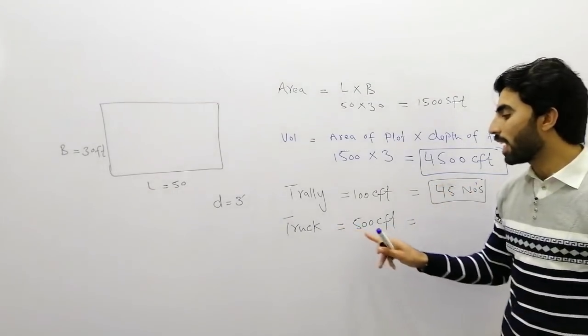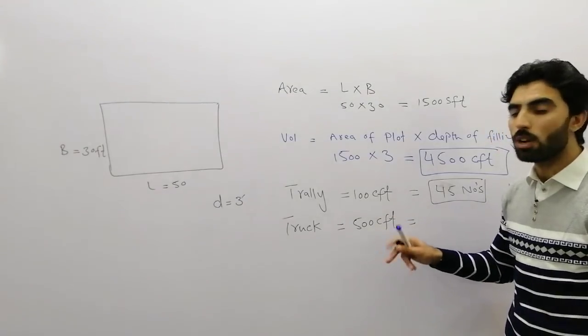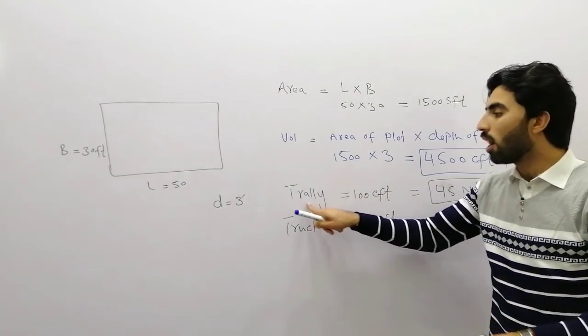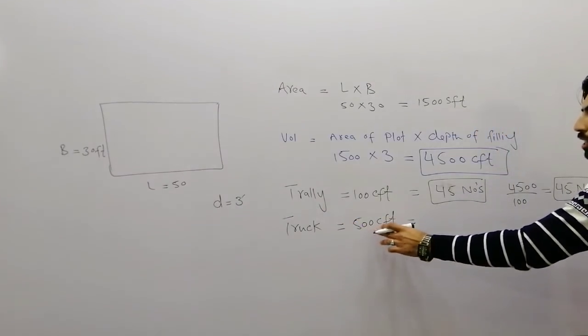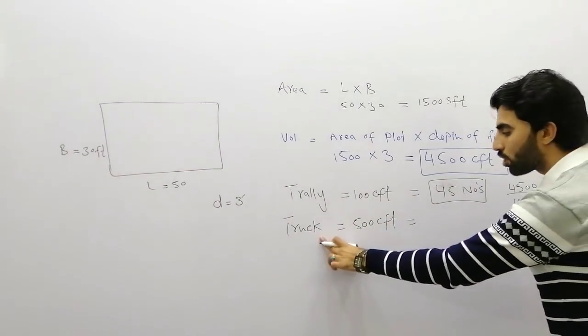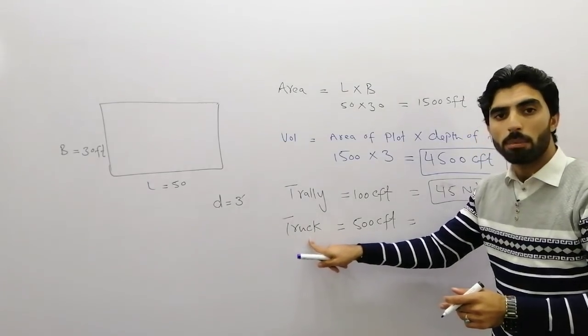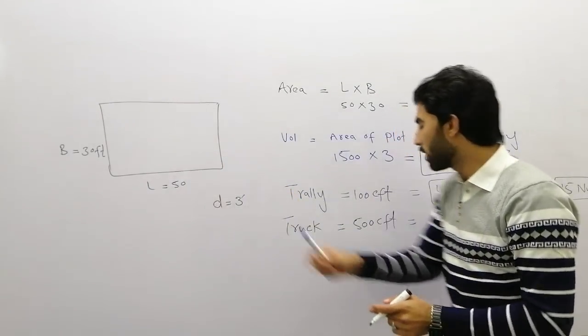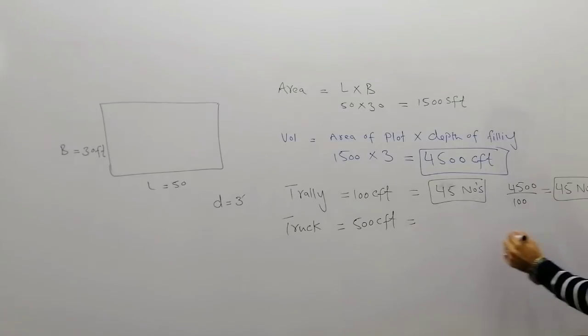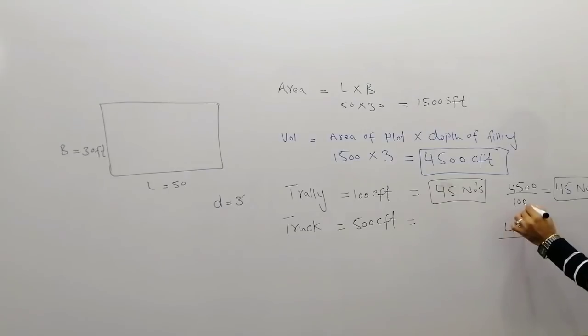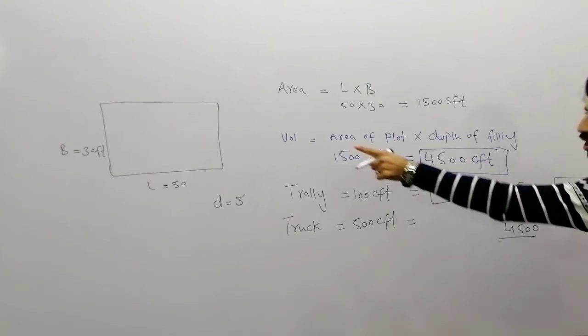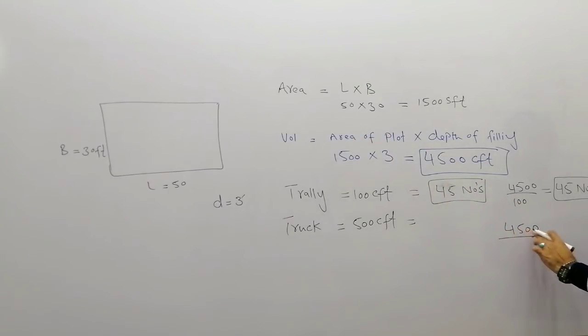If the truck can carry 500 cft, so first of all we will find its volume for truck. So 500 cft can carry truck. How many trucks of materials are required to fill this plot? So 4500 divided by 500, it will give us how much - 9 numbers.